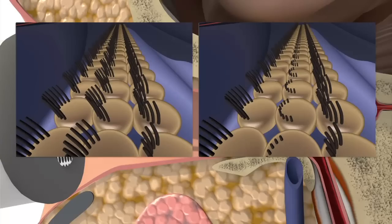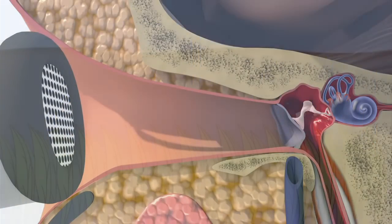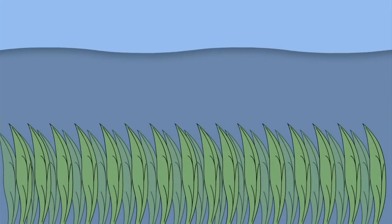If we use our earlier example of seagrass moving with the action of waves in the ocean, we can demonstrate the impact of excessive noise on the cochlear hair cells.